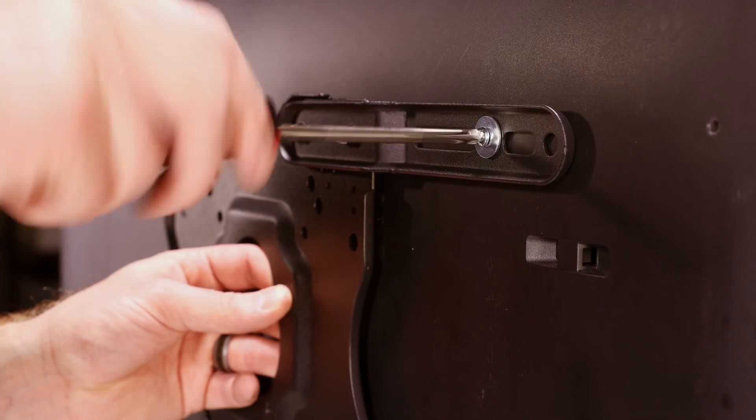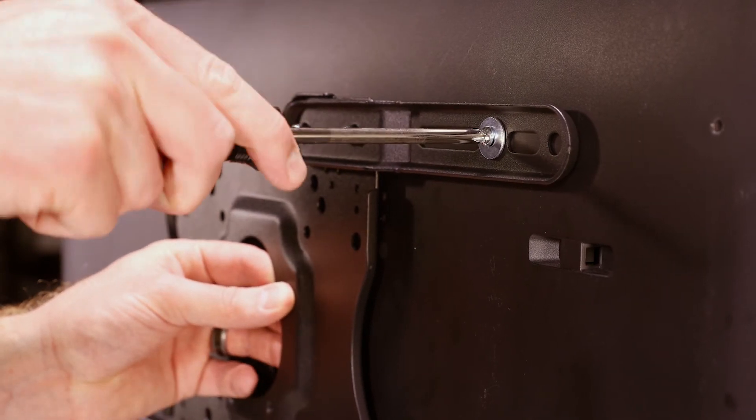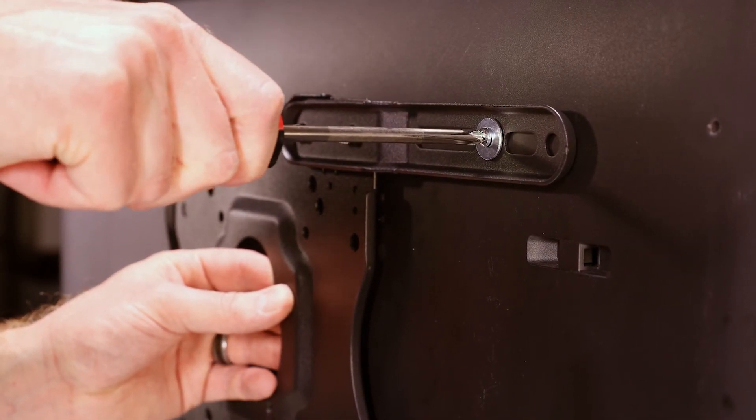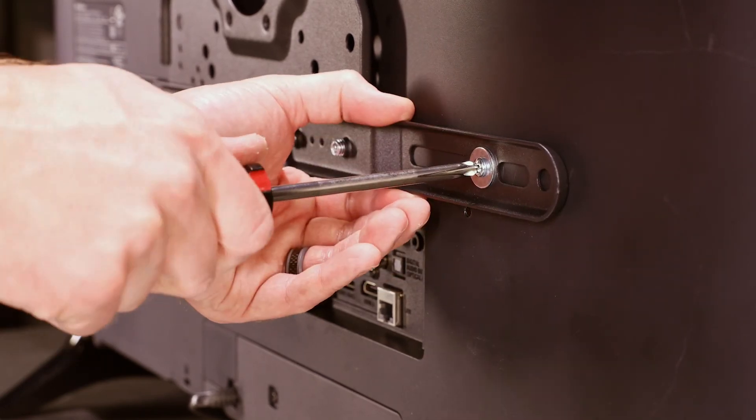Place the display plate against the back of the display and align the holes. Attach the display plate using the chosen screws and corresponding washers, as noted in the manual.